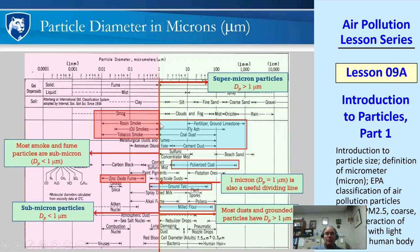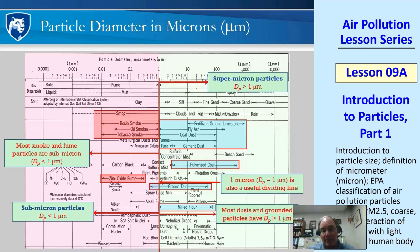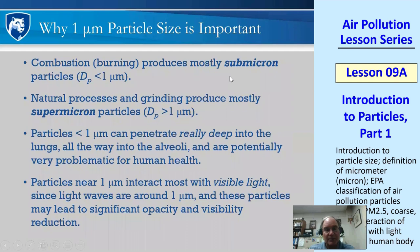Why do mechanically ground particles have a left border right around a micron? Take coffee beans as an example: I start grinding, and the little particles get down to about a micron and they can't break anymore. There's a fundamental physical limit — once particles get to one micron, grinding for three hours still won't produce anything finer. In summary: combustion or burning produces mostly submicron particles; natural processes like grinding and crushing produce supermicron particles. Submicron particles can penetrate very deep into the lungs, and they are within the PM2.5 classification.